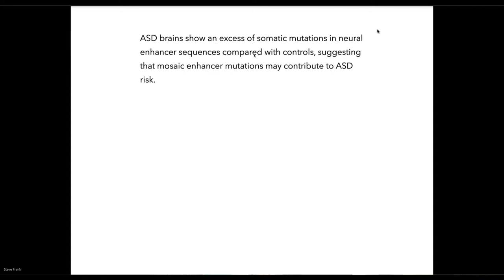'ASD brains show an excess of somatic mutations in neural enhancer sequences compared with controls, suggesting that mosaic enhancer mutations may contribute to autism spectrum disorder risk.' In other words, there's a correlation between these somatic mutations and the actual manifestation of the clinical condition, showing that mosaicism may actually be a significant contributor to this particular disease.